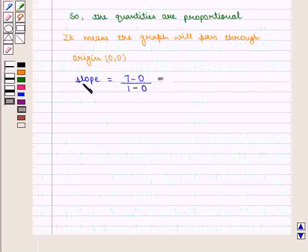So here we have slope as 7 minus 0 is 7, and 1 minus 0 is 1. So we have slope as 7, which is also called unit rate.